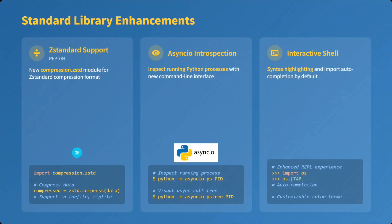Some enhancements have been made to the standard library. Z-standard compression support has been added via a new compression.zstd module. Asyncio introspection now lets you inspect running Python processes with a new command-line interface — for example, `python -m asyncio <pid>`. The interactive Python shell now also has syntax highlighting.